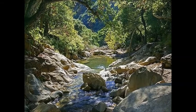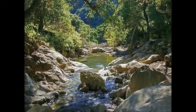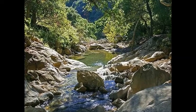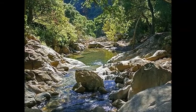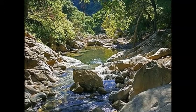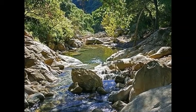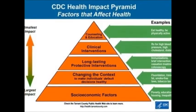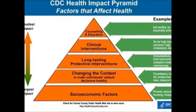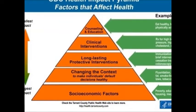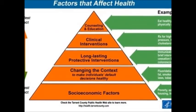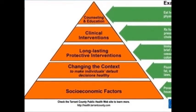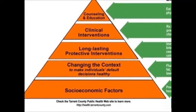Continuing with our river analogy, we now move further upstream — to the very beginning of the stream, to the actual underlying causes, the ultimate causes of behaviors, and consequently the ultimate causes of the ten leading causes of death. The most impactful, most important underlying causes — the ultimate causes of behavior and the ten leading causes of death — are socioeconomic factors.